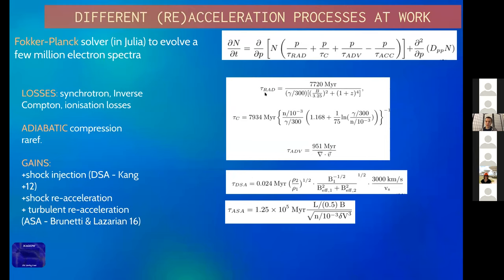We solve the evolution of particles through a standard Fokker-Planck equation with different loss terms, plus acceleration terms taken from diffusive shock acceleration theory. We have shock conditions determining how many electrons are injected — not very relevant here because we don't have very strong shocks — and we can also incorporate the very slow effect of re-acceleration by turbulence, in the latest flavor explored by Brunetti, Lazari, and Simona, to explain the bridge in Abell 399-401.